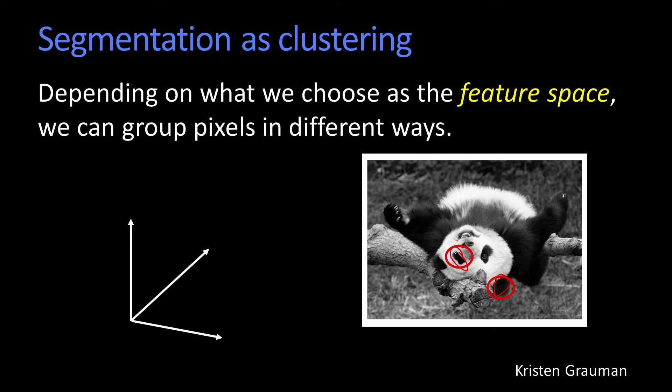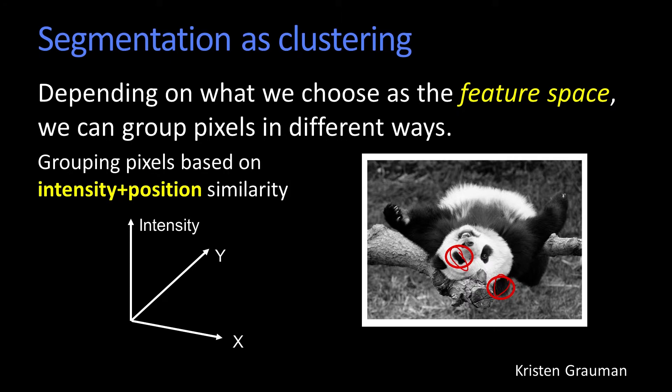Very simple. Instead of just clustering on intensity, you would add the position as well. So now we have a three-dimensional space of intensity, x, and y — as shown here: intensity, x, and y.